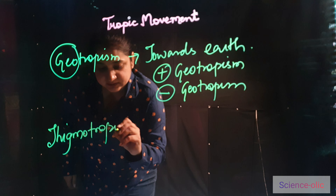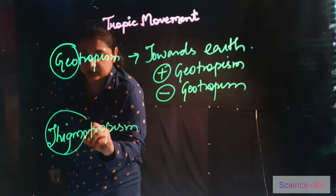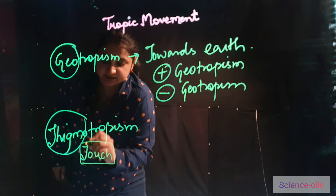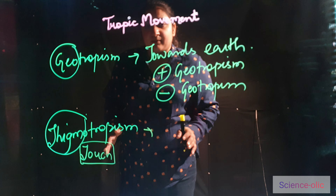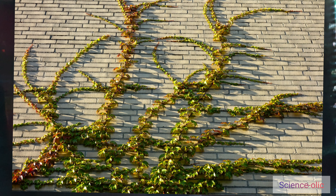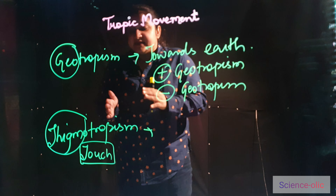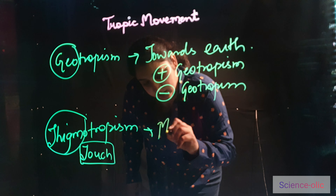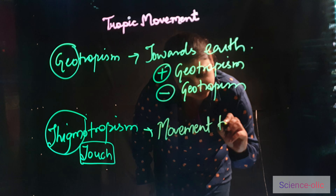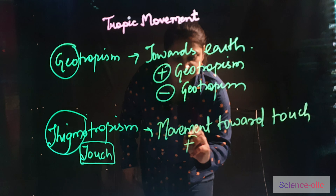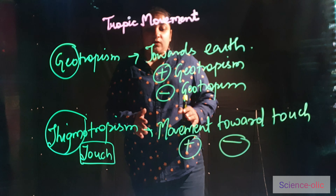The next is thigmotropism. Thigmo is a Latin word which means touch — a response to touch. Creepers are a good example: a money plant climbs upon the wall. When it touches the wall it moves towards the wall and the whole movement is upwards. This response towards touch is thigmotropism.